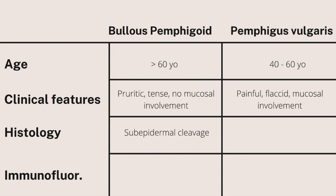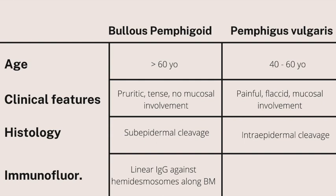Now let's take a closer look at immunofluorescence. For bullous pemphigoid, you will see linear IgG against hemidesmosomes along the basement membrane. While in pemphigus vulgaris, you will see net-like intercellular IgG against desmosomes. This table has most of the high-yield content you need to know when differentiating between these two diseases.